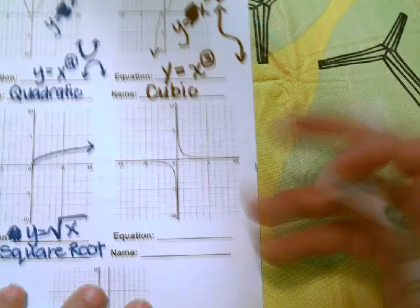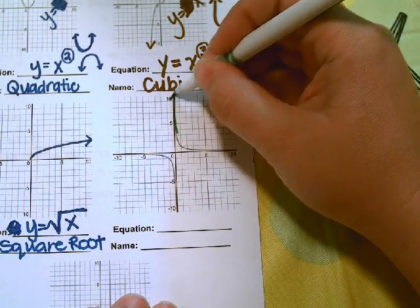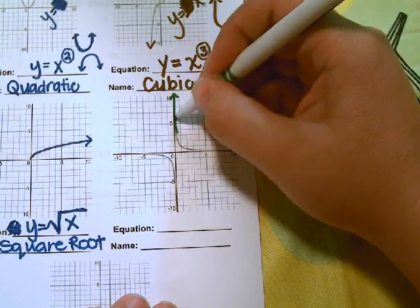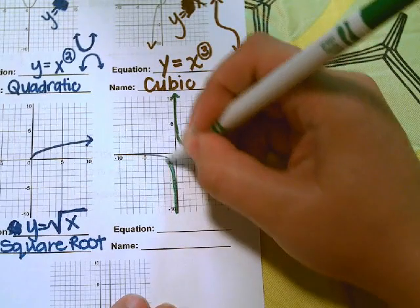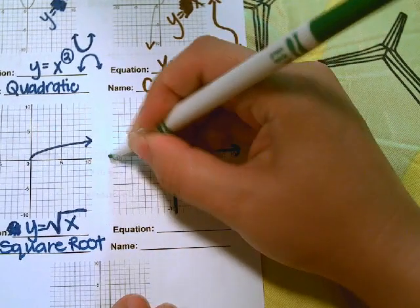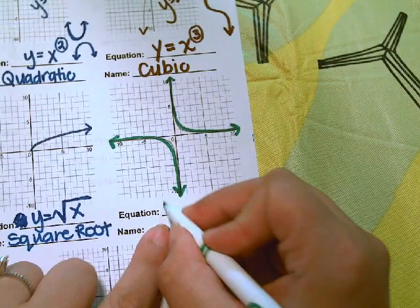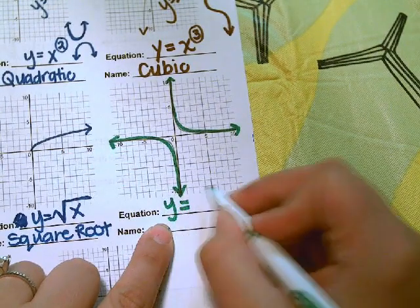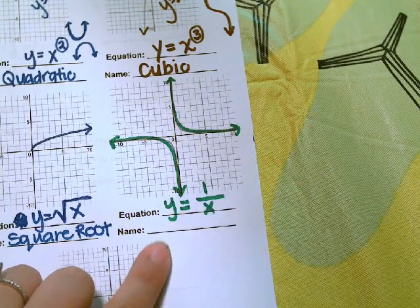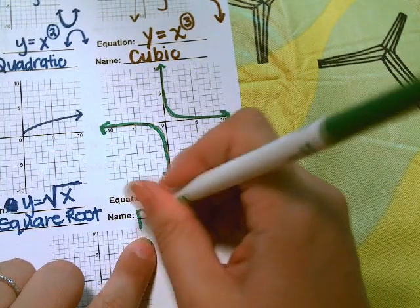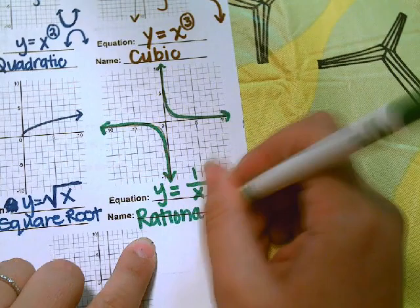Next, we have this graph. It goes towards the y-axis and then curves away. To make this kind of graph, we need a fraction where the x is in the denominator. This is called a rational function.